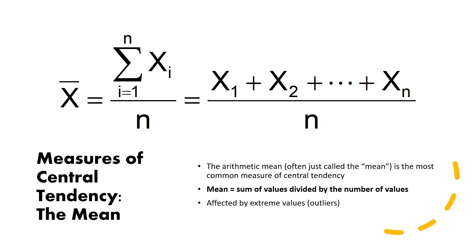We begin with the measures of central tendency. The first measure is the mean. We calculate the mean by dividing the sum of values by the number of values. Here you can see the formula for calculating the mean. Remember, the mean is affected by extreme values, which are also known as outliers. To calculate the mean, you sum up all the values — for example, 1 plus 2 plus 3 plus 4 to the nth value — and divide by the number of values n.